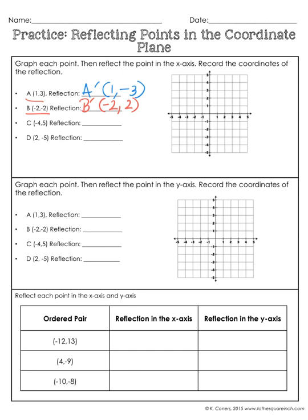Now for point C, we're going to do this a little bit differently. C is at the point (-4, 5) — so 4 to the left, up 5. Here's point C. We want to reflect across the x-axis, so this point has to go down. We can see that point C is in quadrant 2, and we know that in quadrant 2 all the x-values are negative and all the y-values are positive, which is why we have a negative, positive point.